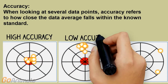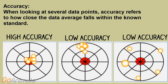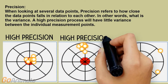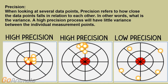Accuracy refers to how close the data average falls within the known standard. A process with high accuracy will have most of the data points clustered around the target value, whereas in a low accuracy process the data points are away from the target value. Precision refers to how close the data points fall in relation to each other — in other words, what is the variance? A high precision process will have little variance between the individual measurement points.